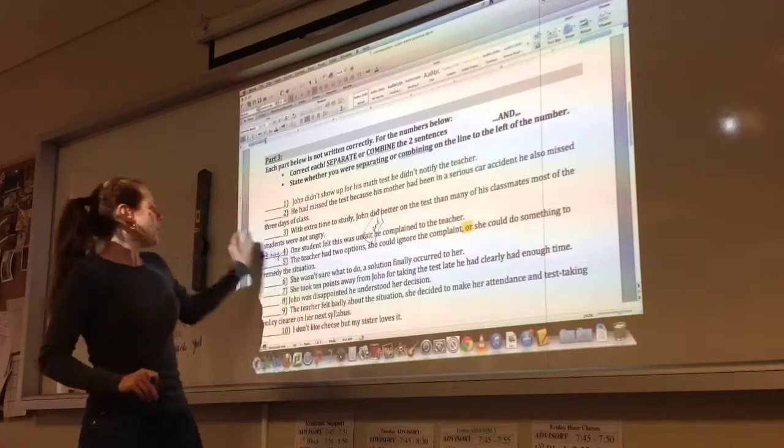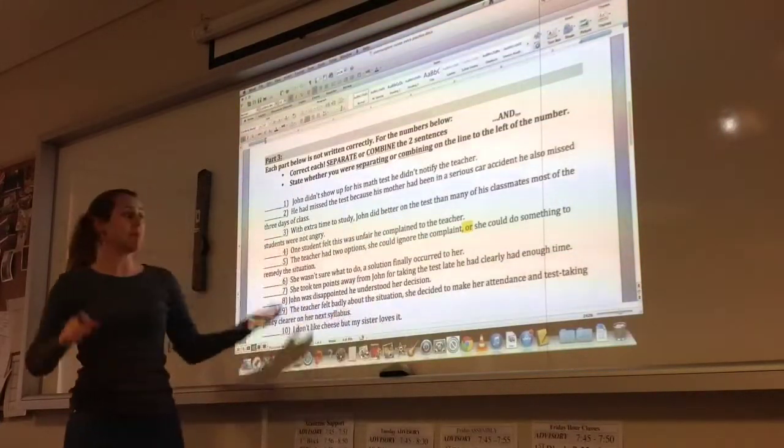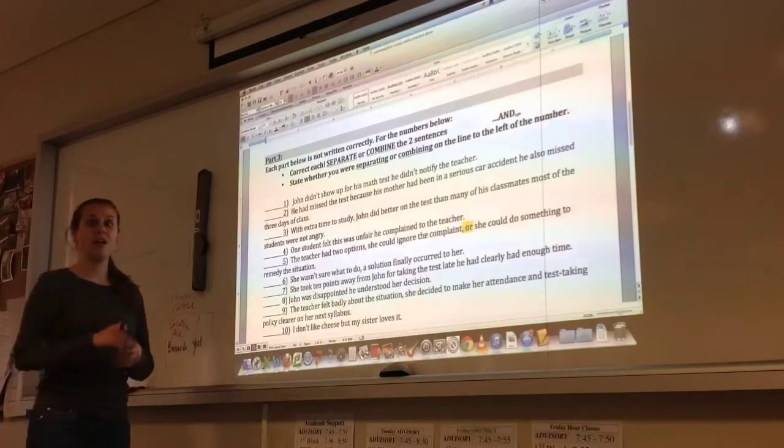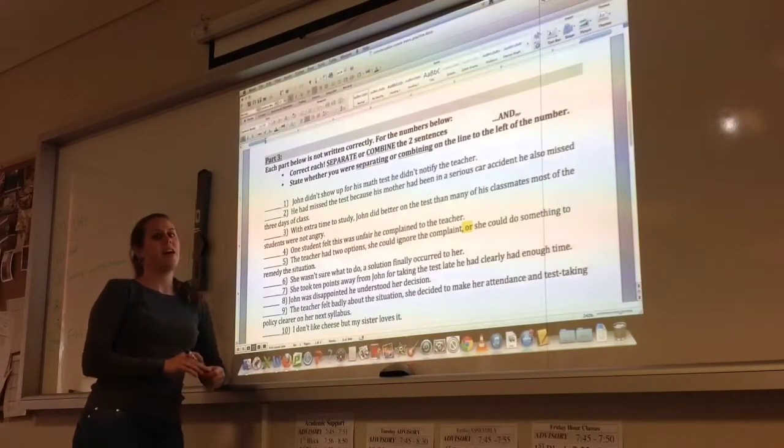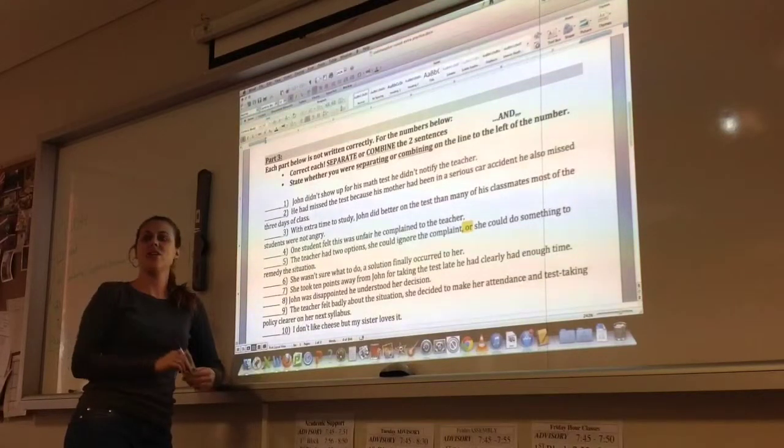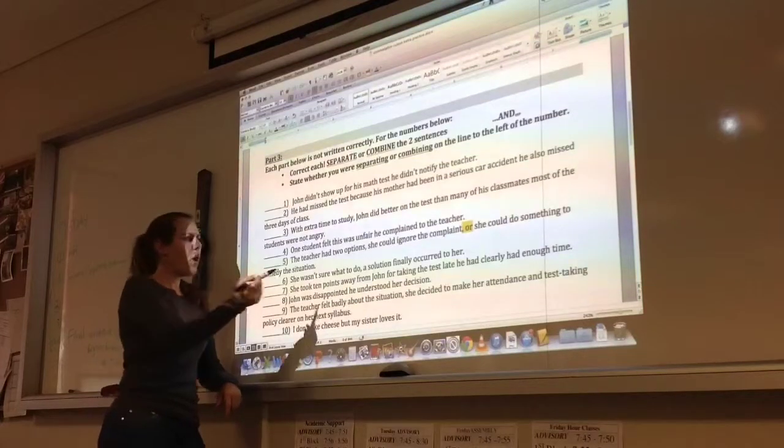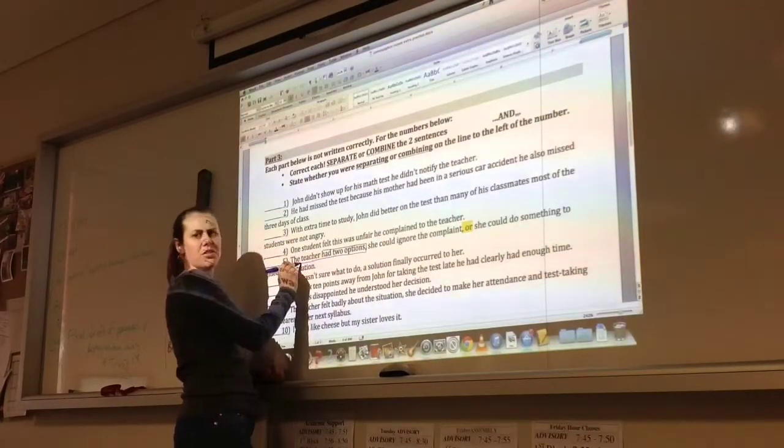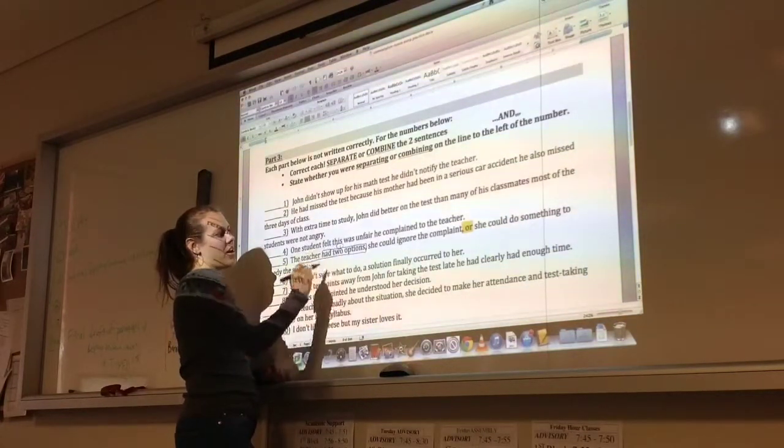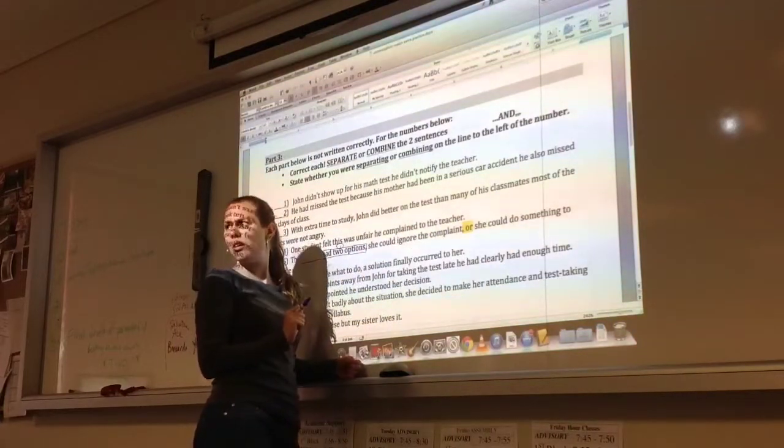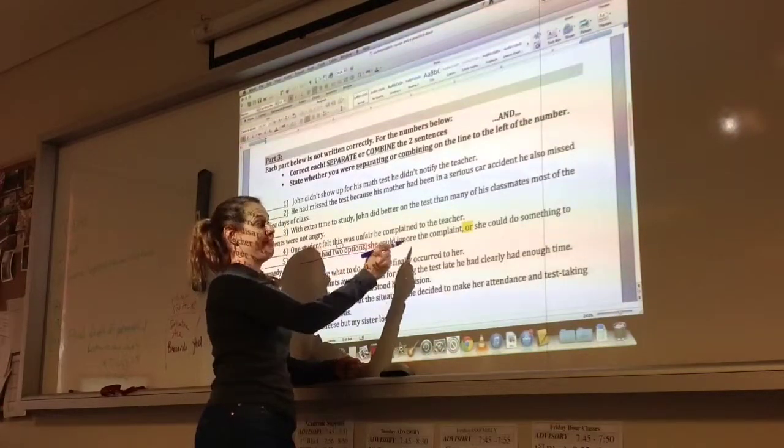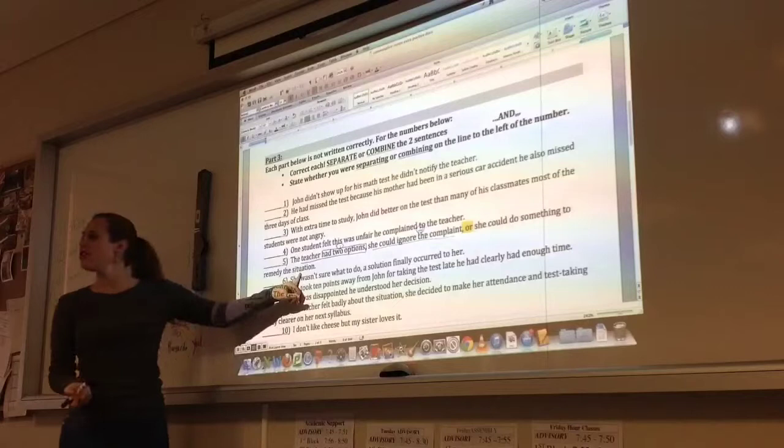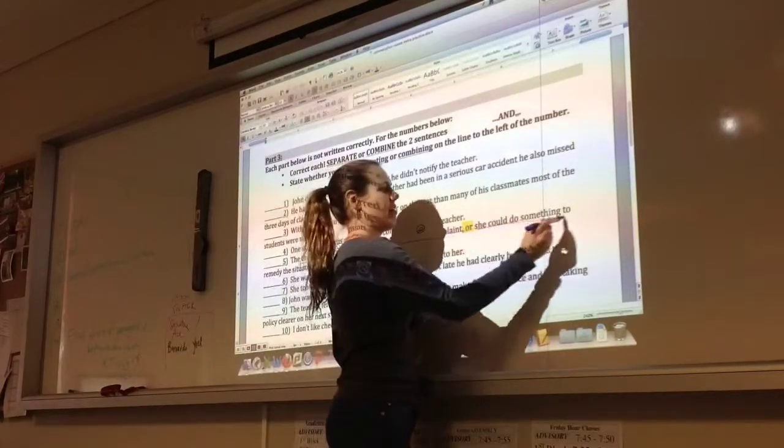Number five. The teacher had two options. She could ignore the complaint. Or she could do something to remedy the situation. Because it says each part below is not written correctly. So it's not written correctly. There might be a trick in here. Okay, Donna. The teacher had two options. You can add a semicolon. Why do you say this? Because the teacher had two options, so it's like comma and explaining the two options. So, what if the teacher had two options? Is that a fragment or a sentence? A sentence. She could ignore the complaint. Is that a sentence on its own? No. She could ignore the complaint. Because it has a subject. So she could ignore the complaint is another sentence. She could do something to remedy the situation. Is that a sentence? Yes. How many sentences do we actually have here? Three.